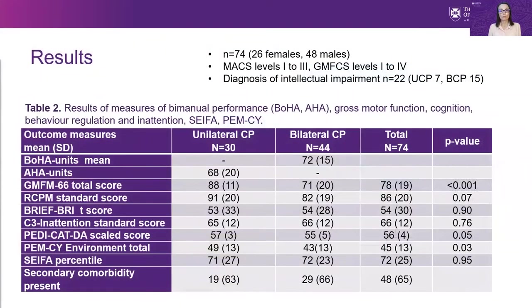Seventy-four children participated in this study. Children had a manual ability classification level between one and three, as that's what the measures of hand function — the AHA and the BOHA — cater for. Twenty-two children had an intellectual impairment, and results are shown by neurological distribution, that is children with unilateral or bilateral CP.